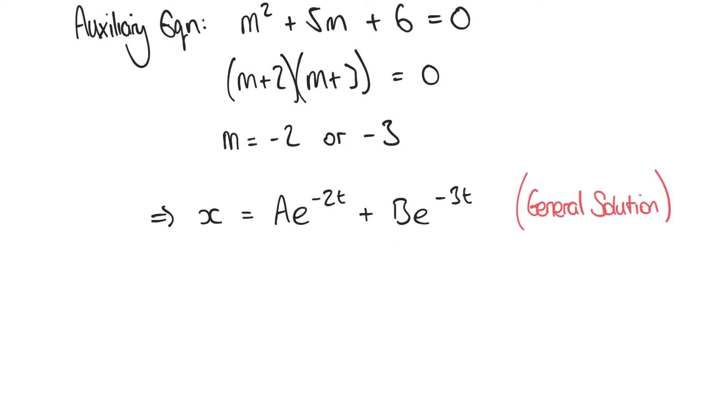And this is our general solution, but we don't know the value of these two unknown constants A and B, and what we must do is substitute some of the initial values we were given at the start in order to start to try and find the values of these unknown constants.